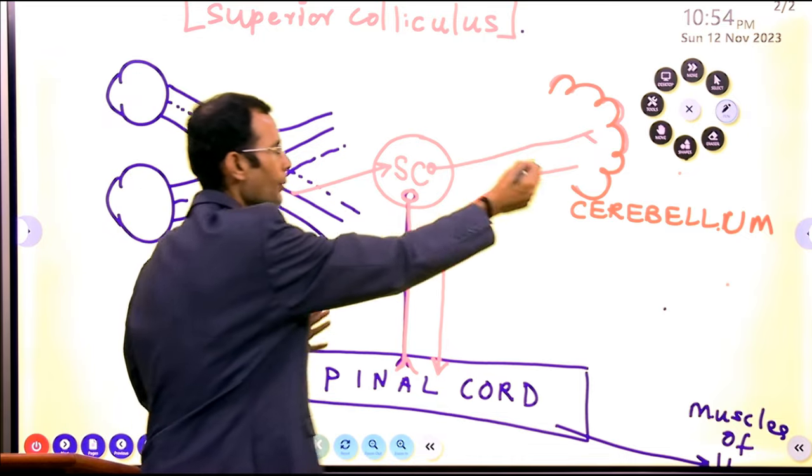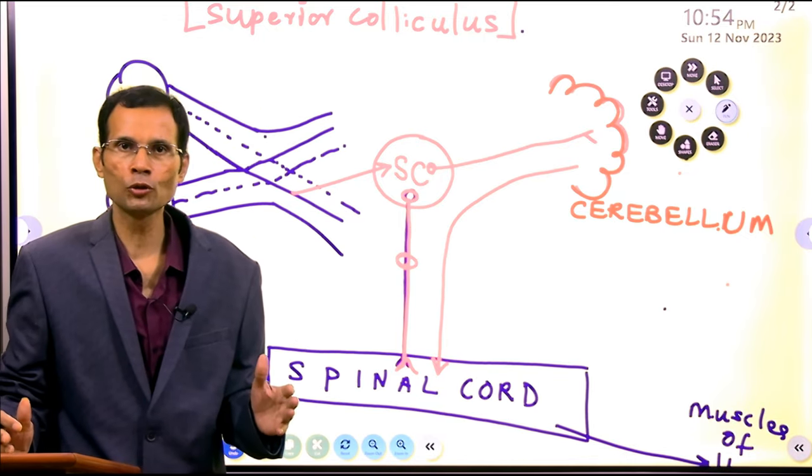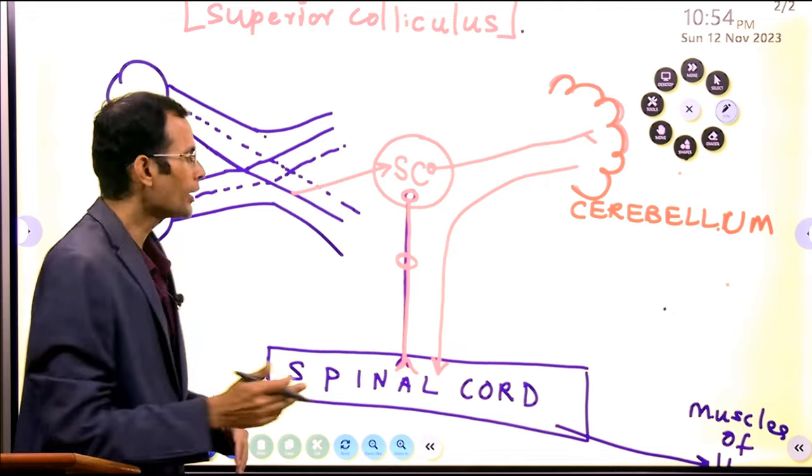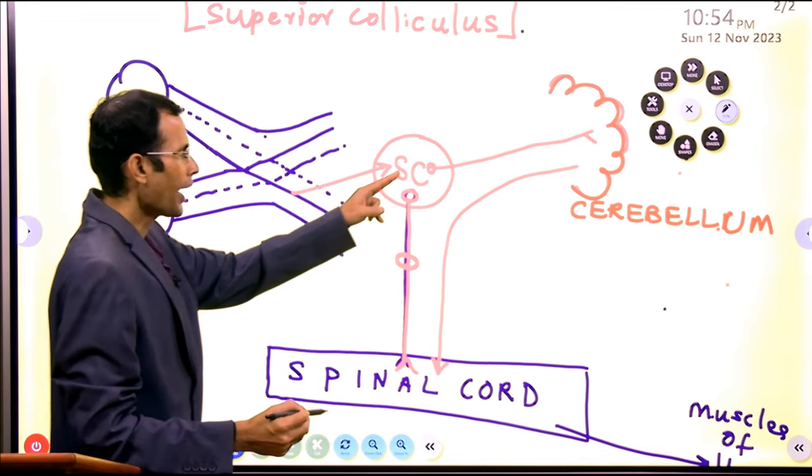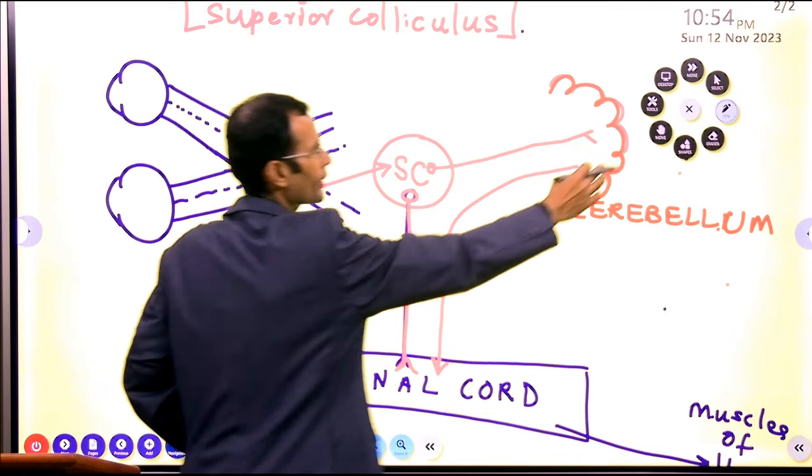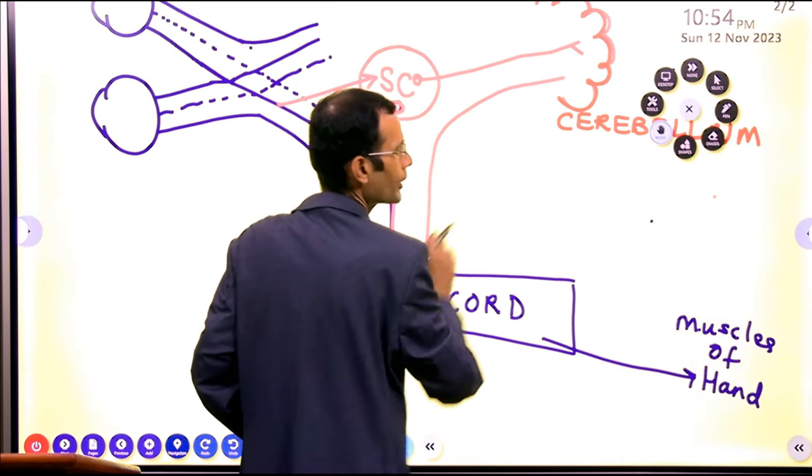So cerebellum is going to coordinate the muscle groups and it is going to work in close association with the tectospinal tract.